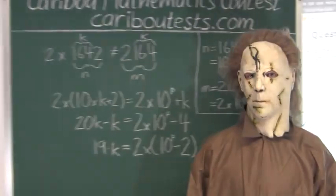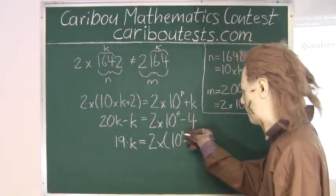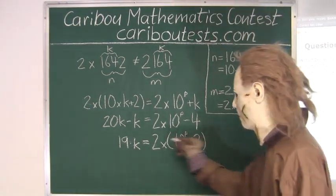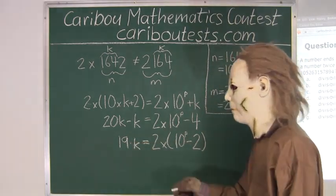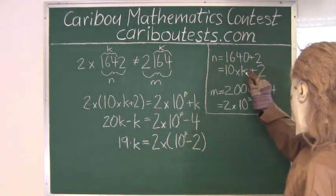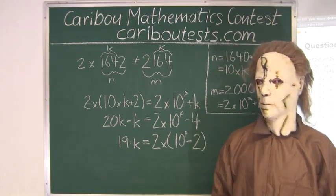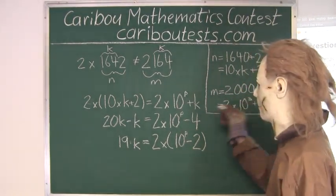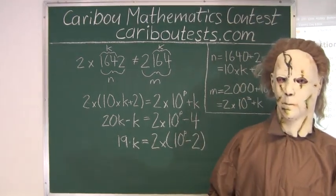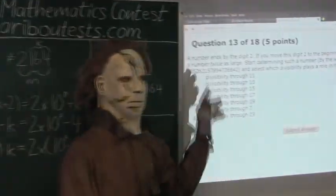But now if we wanted to find the smallest possible values for n and m, we would start off with p being 1 and gradually increase until this bracket would be divisible by 19. Because then we could find the value of k and then substitute the value of k into here to find n and then find m. And if we were to do this, we would find the smallest value for p would be p equals 13.